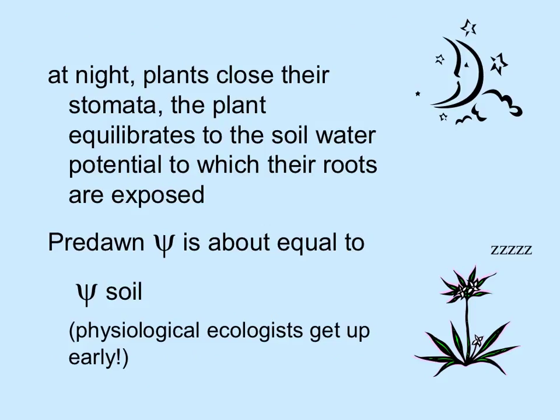In most typical plants, stomata close at night and the plant equilibrates to the soil water potential to which the roots are exposed, so pre-dawn water potential of the plant is approximately equal to the water potential of the soil. Physiological ecologists — people who measure these things — get up very early to measure pre-dawn conditions and then how things change when the sun comes up and the plant starts photosynthesizing.